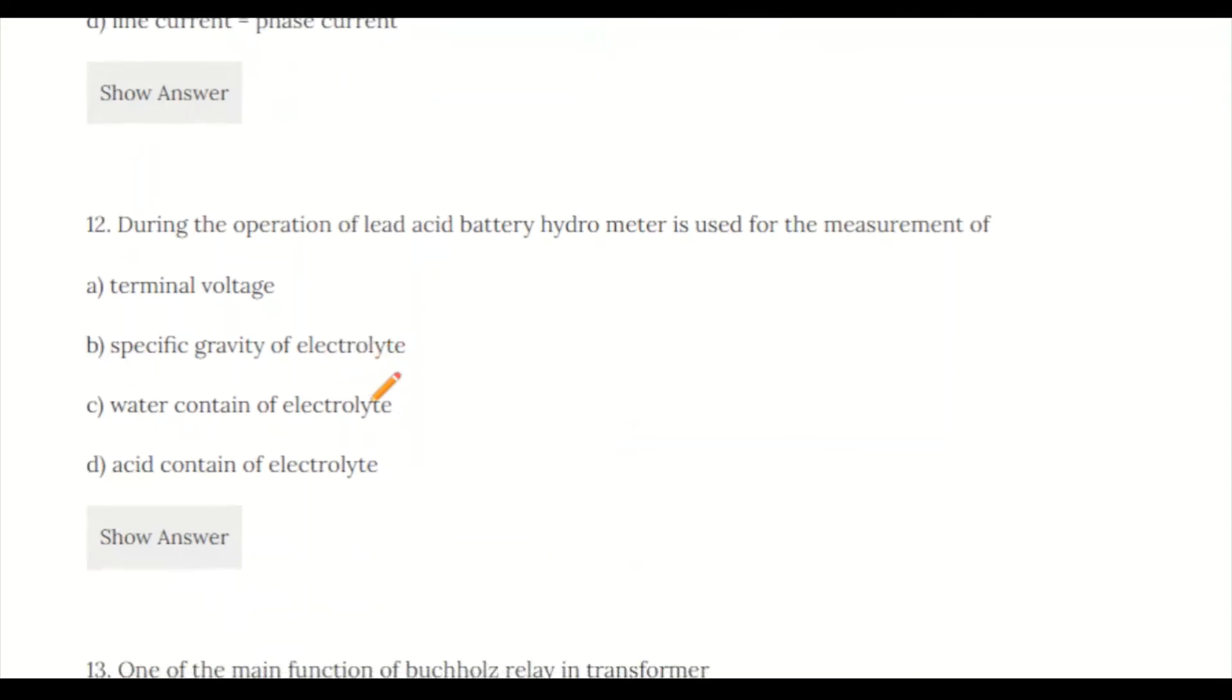Question 12: During the operation of lead acid battery, hydrometer is used for the measurement of: a) terminal voltage, b) specific gravity of electrolyte, c) water content of the electrolyte, d) acid content of the electrolyte. The correct answer is specific gravity of the electrolyte, option B.